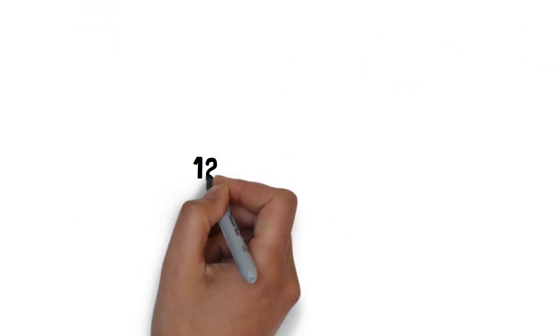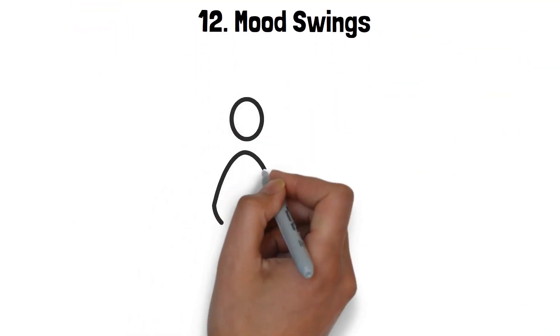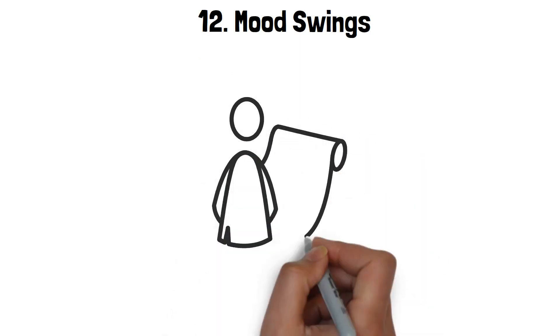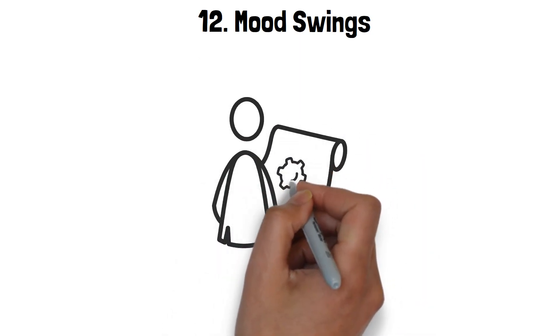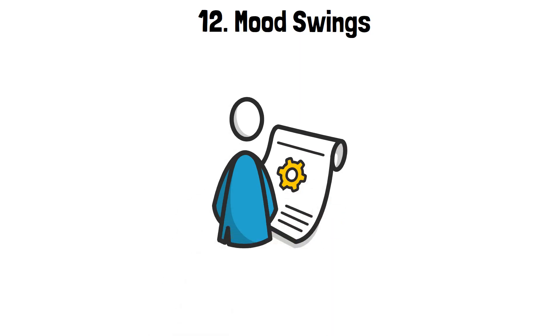12. Mood Swings. A narcissistic wife's mood can swing like a pendulum, often without a clear trigger. One moment, she might be exuberant and seemingly on top of the world. And the next, she's plunged into a state of despair or rage.